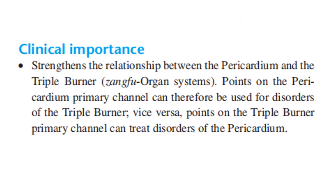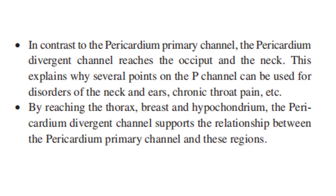Clinical importance: this strengthens the relationship between the pericardium and the triple burner, the sanghu organ system. Points on the pericardium primary channel can therefore be used for disorders of the triple burner. Vice versa, points on the triple burner primary channel can be used for disorders of the pericardium. In contrast to the pericardium primary channel, the pericardium divergent channel reaches the occiput and the neck, explaining why several points on the pericardium channel can be used for disorders of the neck and ears.